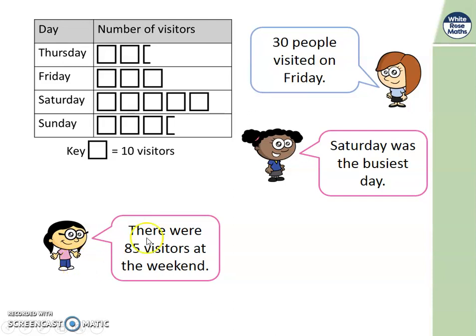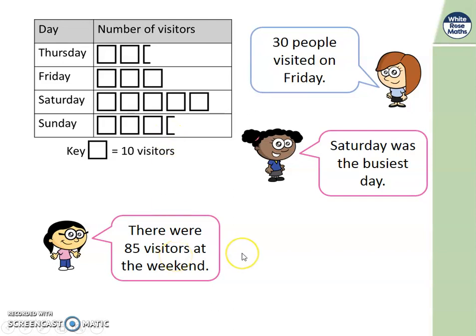This girl says there were 85 visitors at the weekend. What is a weekend? Yes, it's Saturday and Sunday together. Let's check if she's right: counting in tens up to 80, and five more makes 85. That's correct, well done.